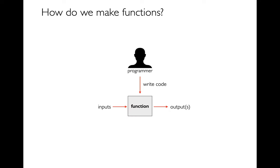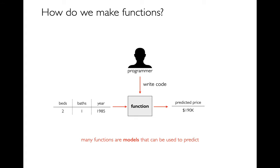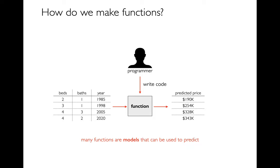All of you have been running functions for a long time. A function takes inputs, maybe in the form of parameters, and then has some outputs — maybe printing something or returning a value. For example, a function could be doing something like making some sort of prediction. Maybe my input is some details about a house that's for sale, and then I might be predicting what it might sell for. When I have a function like this, that's an example of a model.